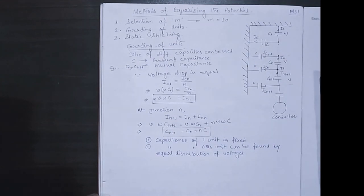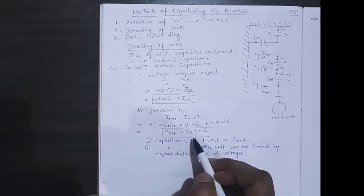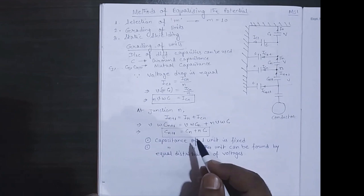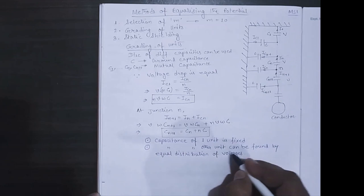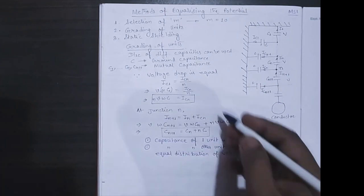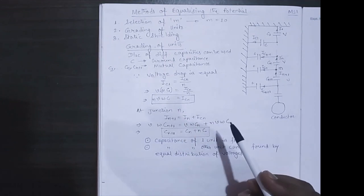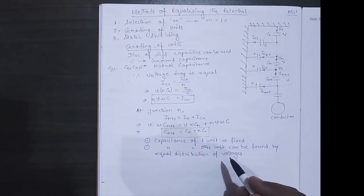If you haven't checked my video on what is string efficiency and why this capacitance are varying, you can check my previous video. I have shared the link in the description box. So this is one of the ways of equalizing the potential.